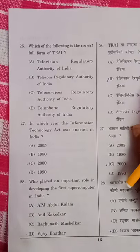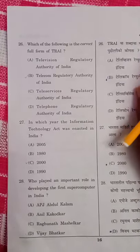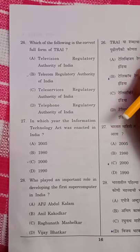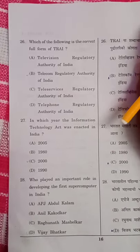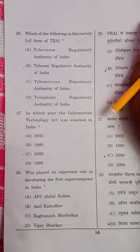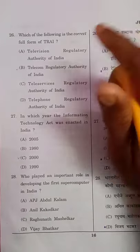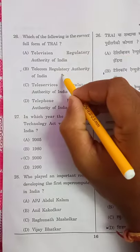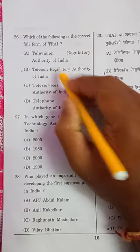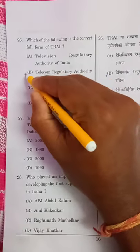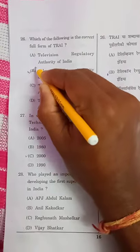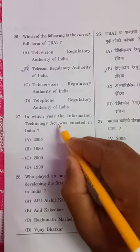Question number 26: Which of the following is the correct full form of TRAI? TRAI is nothing but Telecom Regulatory Authority of India. Option B is the right answer.